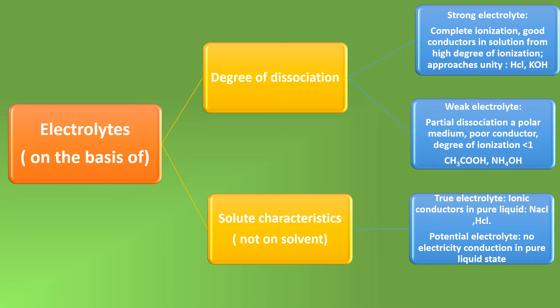Based on degree of dissociation, strong electrolytes dissociate completely into ions in solution. Hence, they are good conductors in solution and have a high degree of ionization. For example, hydrochloric acid. Whereas weak electrolytes dissociate to only a small extent and give fewer ions. Hence, they are poor conductors and have a degree of ionization less than 1. For example, acetic acid.